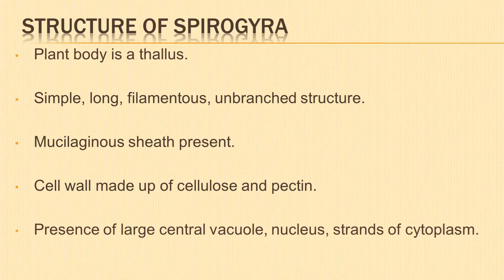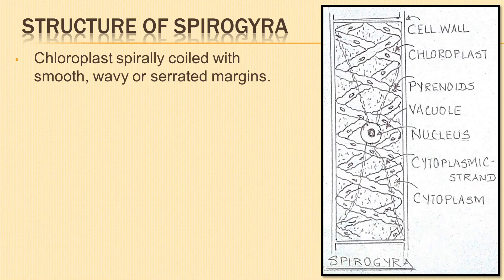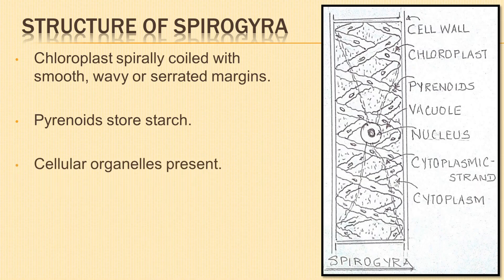Each cell has a large central vacuole within which the nucleus is suspended by fine strands of cytoplasm. There may be one or more chloroplasts which are ribbon-shaped and spirally coiled with smooth, wavy, or serrated margins. Pyrenoids are also present which store starch. Cellular organelles like endoplasmic reticulum, Golgi bodies, etc. are present along with ribosomes which are scattered in the cytoplasm. In the figure, pyrenoids, strands of cytoplasm, nucleus, and spirally coiled chloroplasts can be clearly seen.